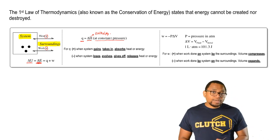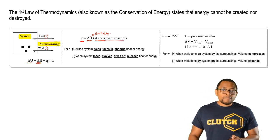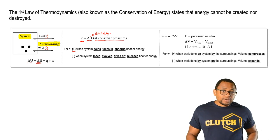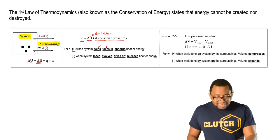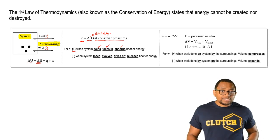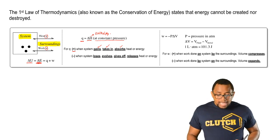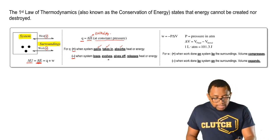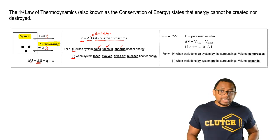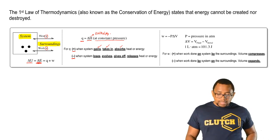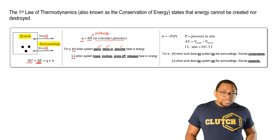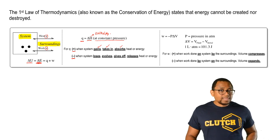Q can be positive or negative, and it becomes important to remember key terms. Q is positive when our system, which represents our chemical reaction, gains, takes in, or absorbs heat or energy from the surroundings. Q is negative when it's losing heat — if it loses, evolves, gives off, or releases heat or energy to the surroundings. Remember, if one thing is gaining, the other thing is losing. If my system is taking in heat, my surroundings are losing heat. If my system is losing heat, that's because the surroundings are absorbing that heat.